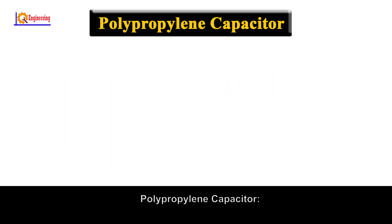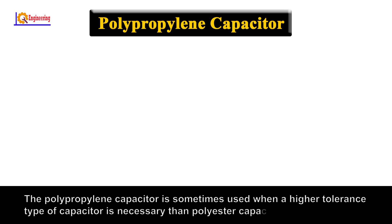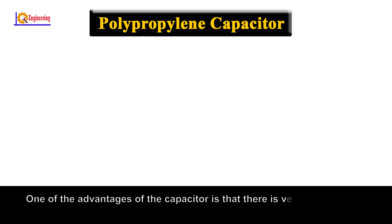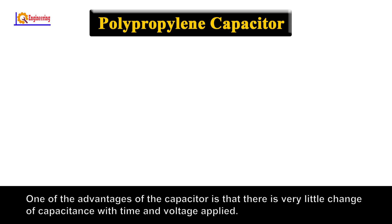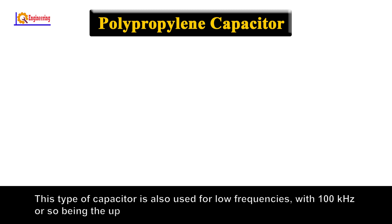Polypropylene capacitors are sometimes used when a higher tolerance type of capacitor is necessary than polystyrene capacitors offer. These capacitors use a polypropylene film for the dielectric. One of the advantages is that there is very little change in capacitance with time and applied voltage. This type is also used for low frequencies, with 100 kHz or so being the upper limit.